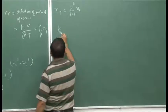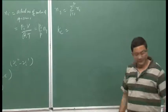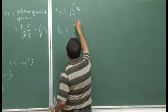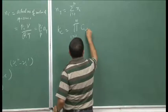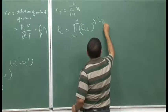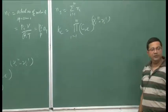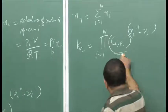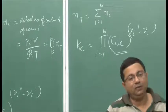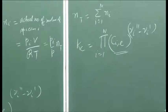Similarly, we can define Kc, the equilibrium constant based on concentration — defined as the product over i from 1 to n of c_i at equilibrium raised to the difference in stoichiometric coefficient, where c_i represents the concentration of species i at equilibrium.